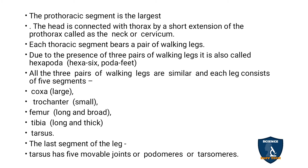Due to the presence of three pairs of walking legs, the cockroach is also called hexapoda. Hexa means six and podia means feet — so six legs in total. All three pairs of walking legs are similar, and each leg consists of coxa (large), trochanter (small), femur (long and broad), tibia (long and thick), and tarsus — giving five segments per leg.